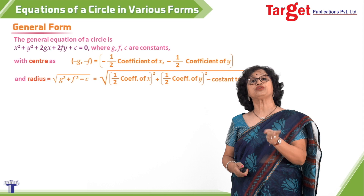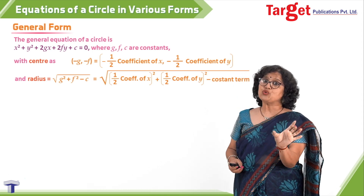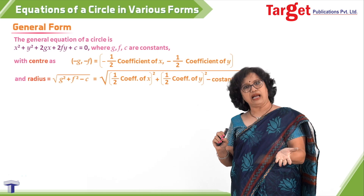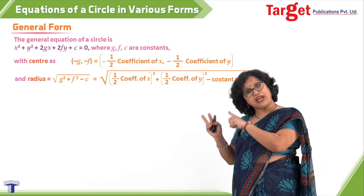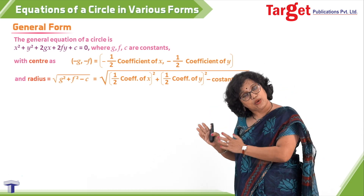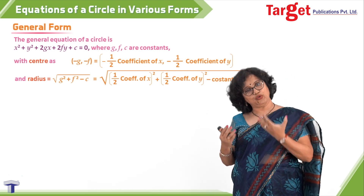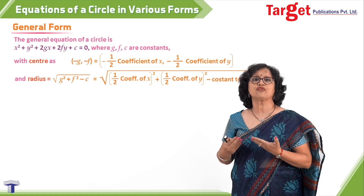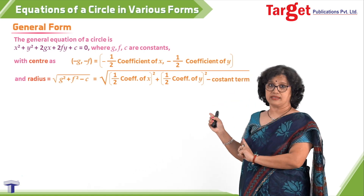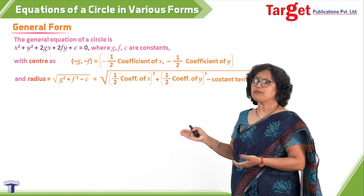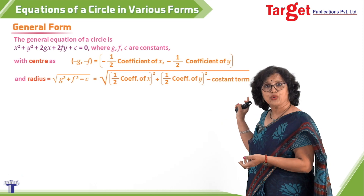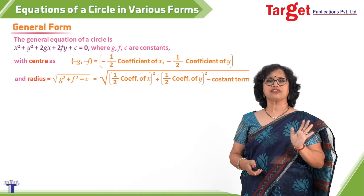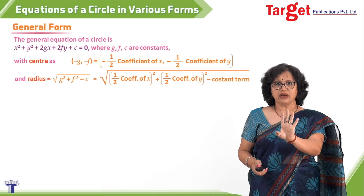The radius becomes √(g² + f² − c). Here's why: completing the square adds g² and f² to both sides, and taking the constant c to the right-hand side gives g² + f² − c on the right. So (x + g)² + (y + f)² = g² + f² − c, giving center (−g, −f) and radius √(g² + f² − c). You can also remember g as half the coefficient of x, etc., and use that big expression if you prefer.